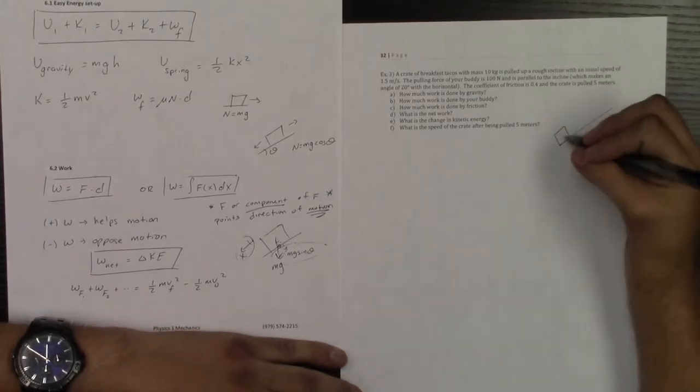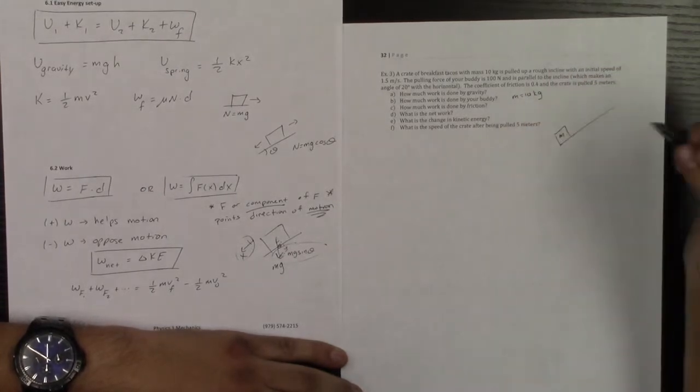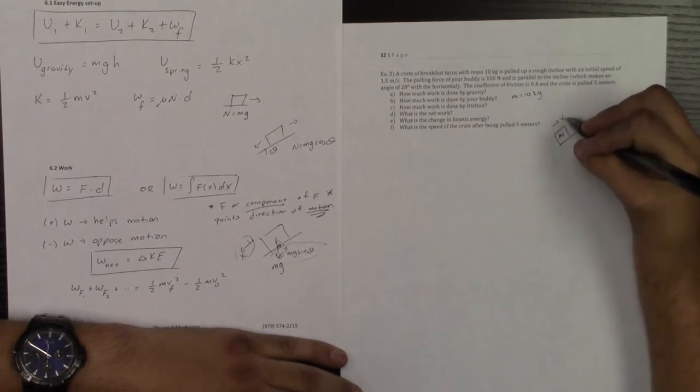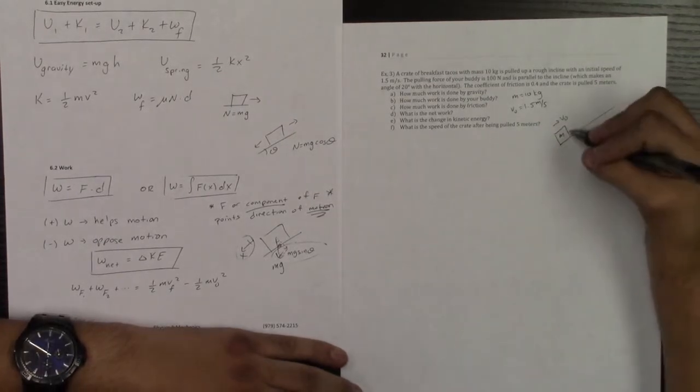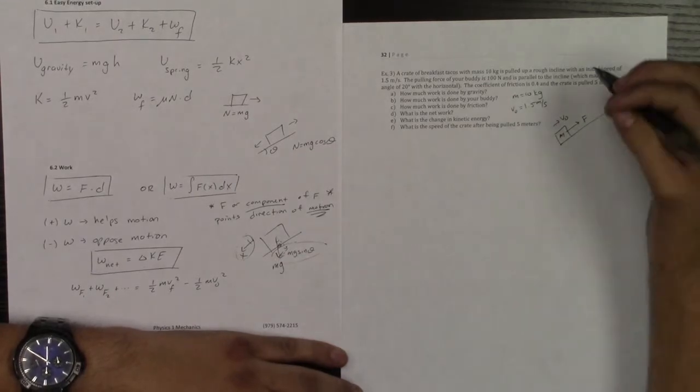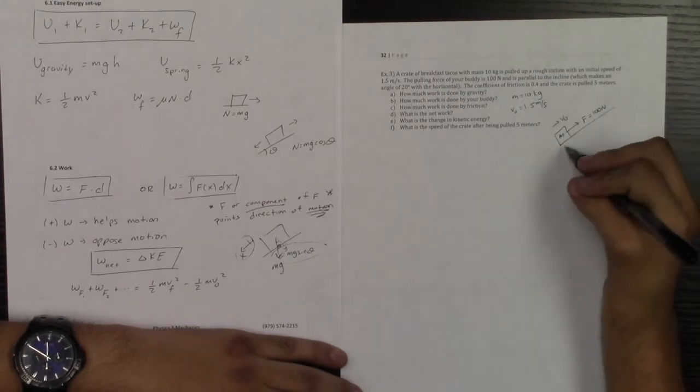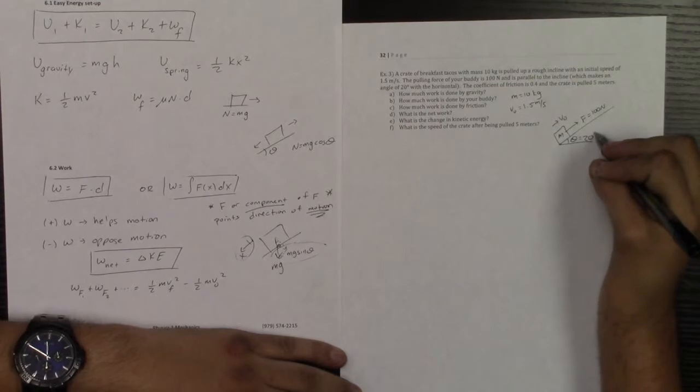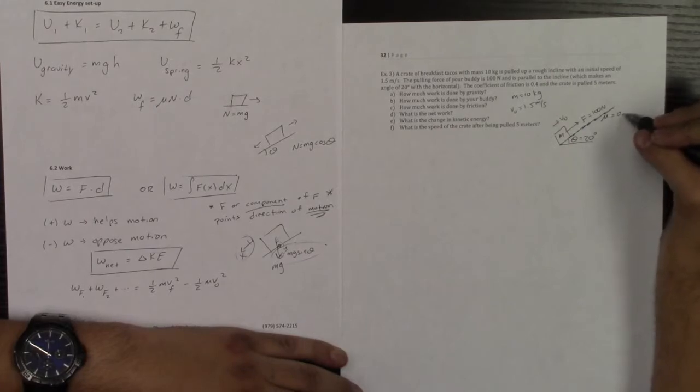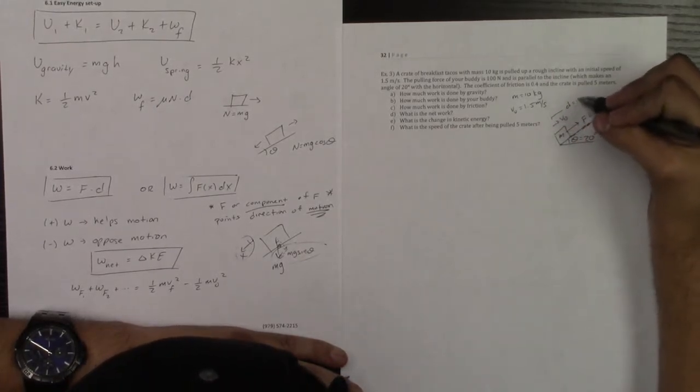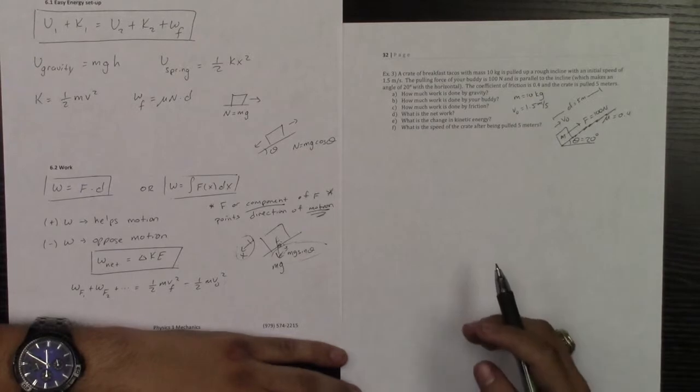We've got a crate of tacos. I've got a mass m of 10 kilograms. It's pulled up a rough incline with an initial speed v-naught. V-naught is 1.5 meters per second. Then I have a pulling force, a force f, that is parallel to the incline where the force f is going to be 100 newtons. And it makes an angle with the horizontal of 20 degrees. We have a coefficient of friction that is equal to 0.4 and the crate is pulled a distance d of 5 meters. So let's go ahead and systematically go through this.